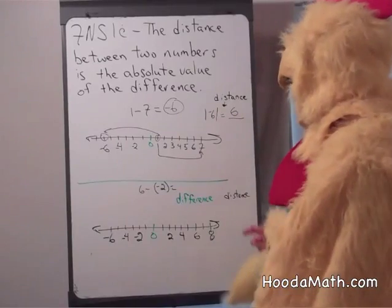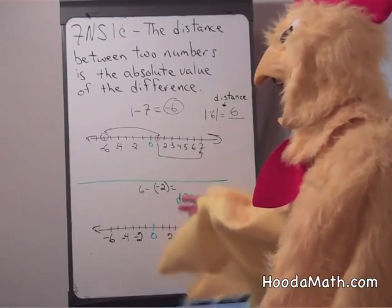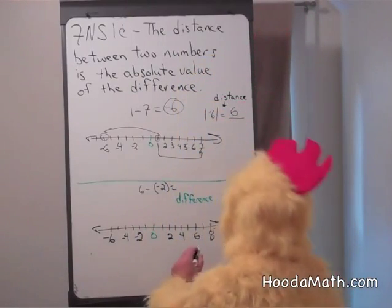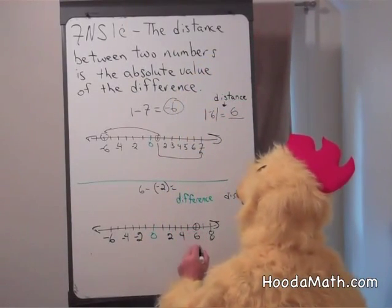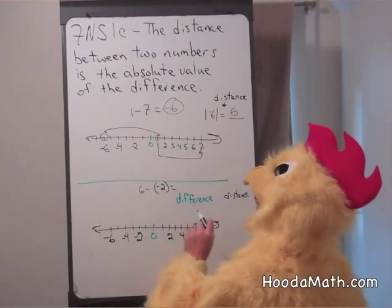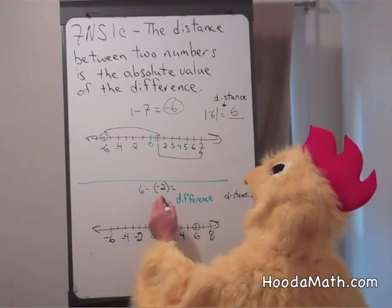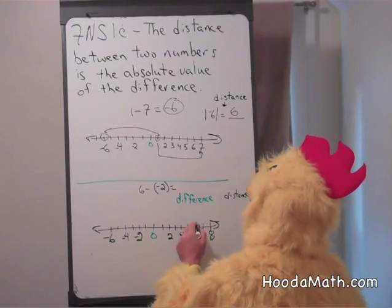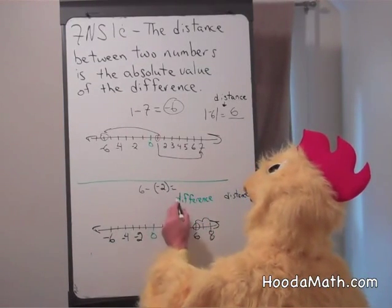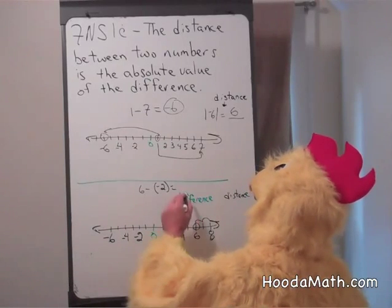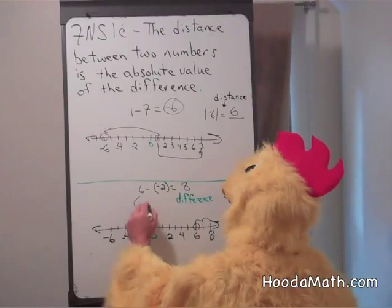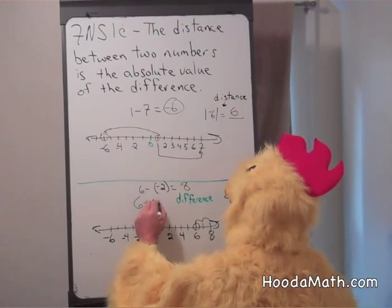Let's give an example. Six minus negative two. If we start at six and we subtract a positive number, we go to the left. But when we subtract a negative number, we move to the right. One, two. So six minus negative two equals positive eight. You may remember that six minus negative two means six plus positive two.